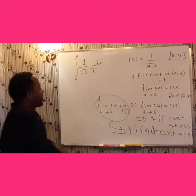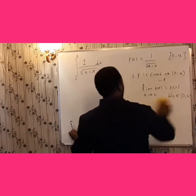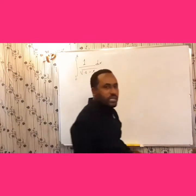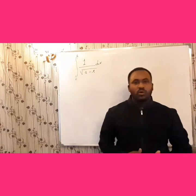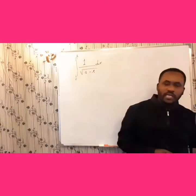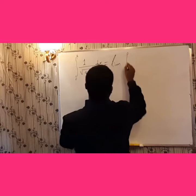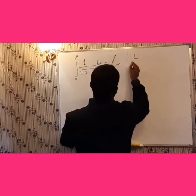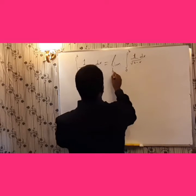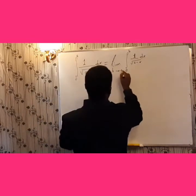Since f is not continuous at x = 4, we cannot directly evaluate the integral of this problem. Therefore, since this integrand is not continuous on the closed interval at the upper limit of the given integration, we have to change this problem — as I told you before — to the concept of limits. Therefore, this will be given by the limit of the integral of 1 over square root of (4 minus x) dx, from 0 to b, where b is an arbitrary point in the interior that closes to 4 from the left.